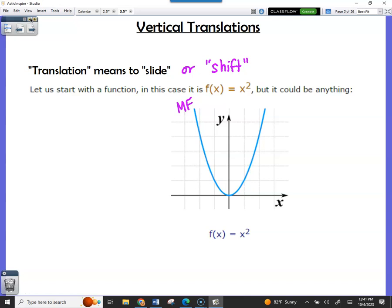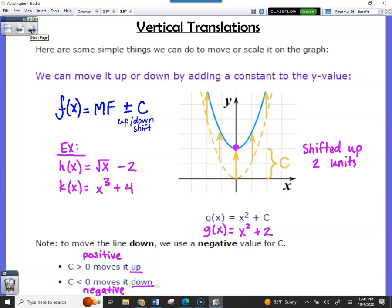So, we're going to start simple with just translating the graph. Translation, you may remember from geometry, means sliding it. But we're going to use the word shift, okay? Shift. This is the mother function for quadratic. Mother function for quadratic. I am going to label it MF. Mother function. It sits at zero, zero, and it expands up.